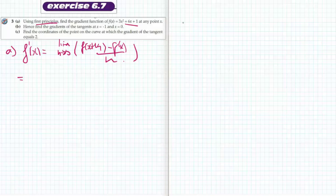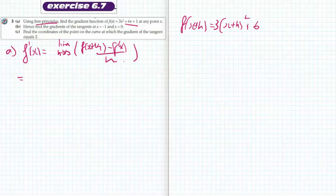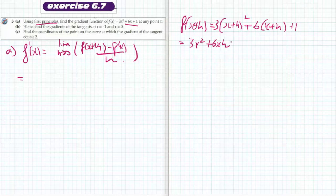In this case, if I put x plus h into here, then f of x plus h is going to equal 3 times x plus h squared plus 6 times x plus h plus 1. That expands to 3x squared plus 6xh plus 3h squared plus 6x plus 6h plus 1.